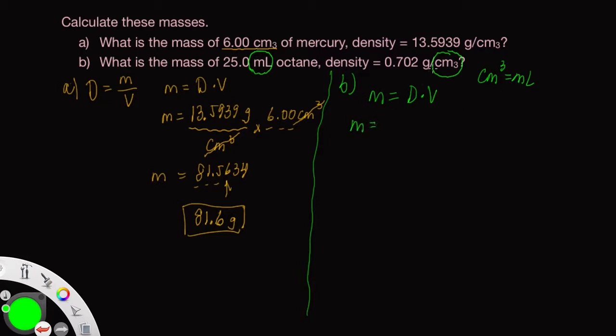So the mass is going to be equal to the density grams per milliliter, which is the same thing as cm cubed, times our volume 25.0 milliliters. So here the milliliters will cancel.